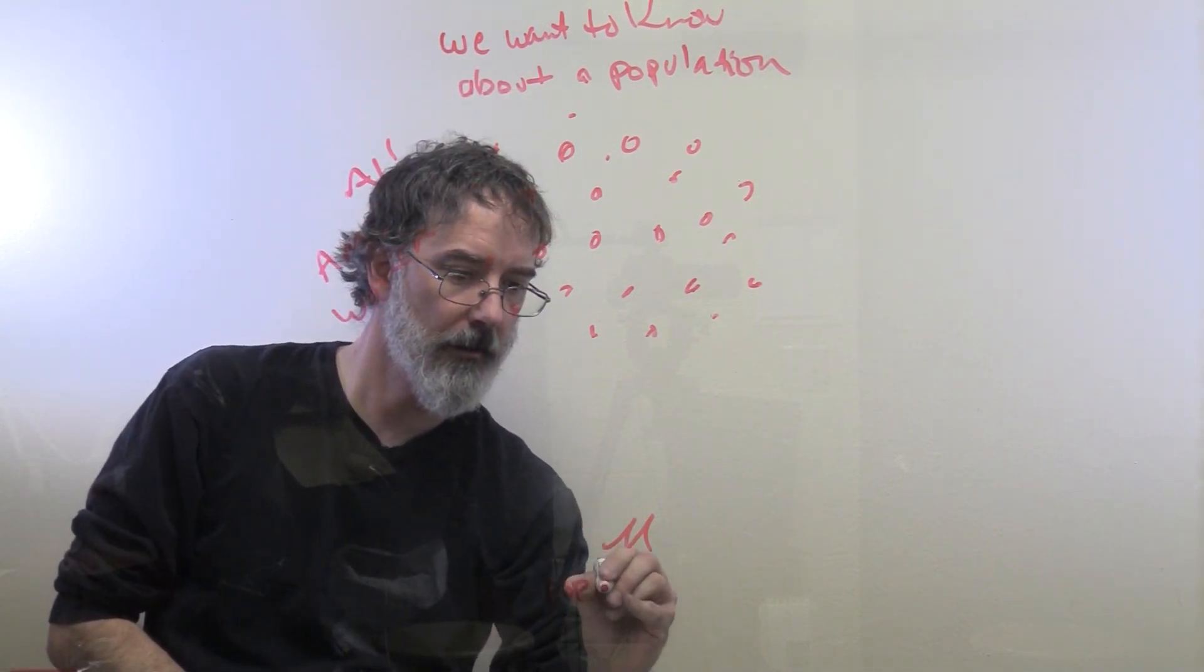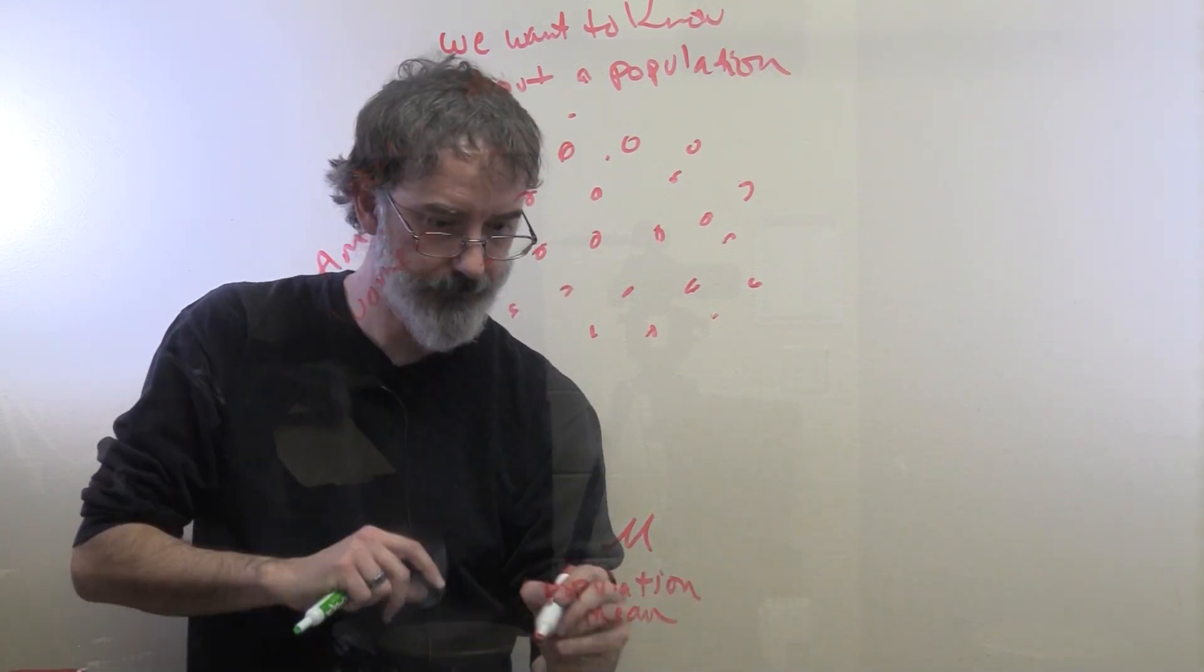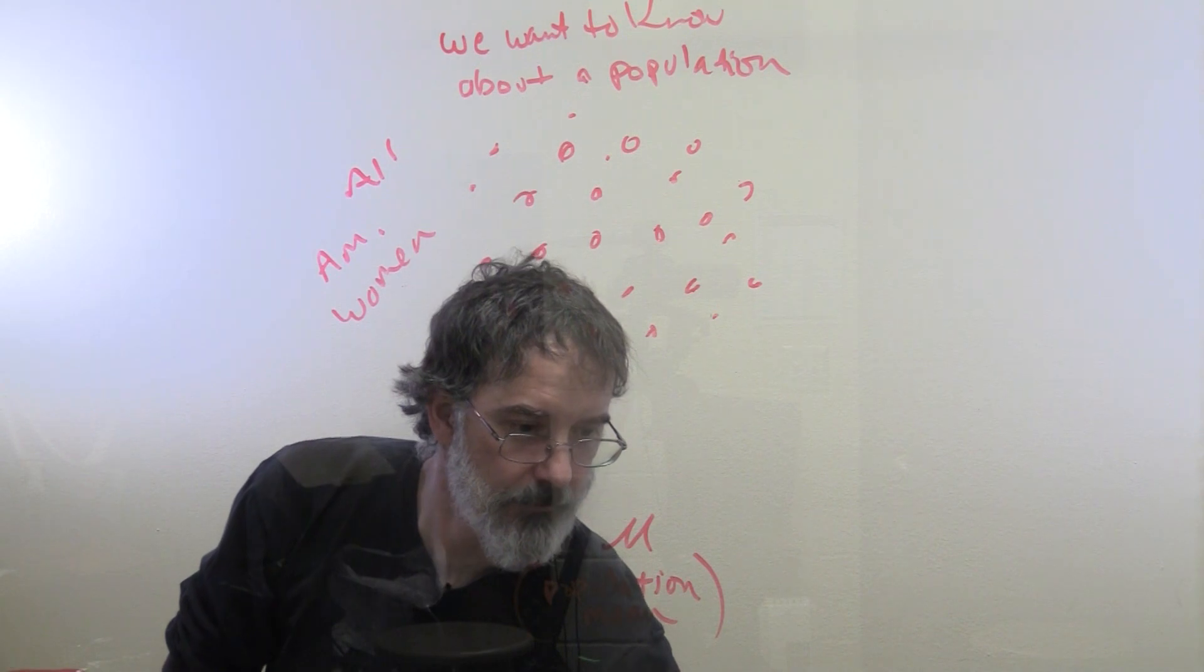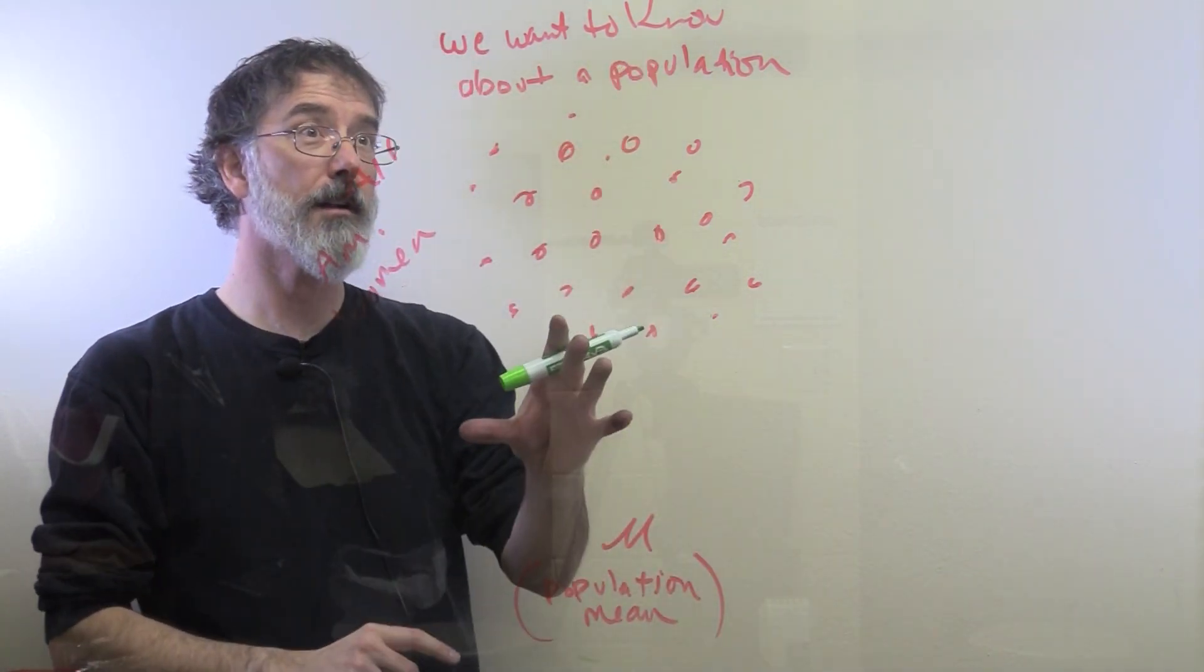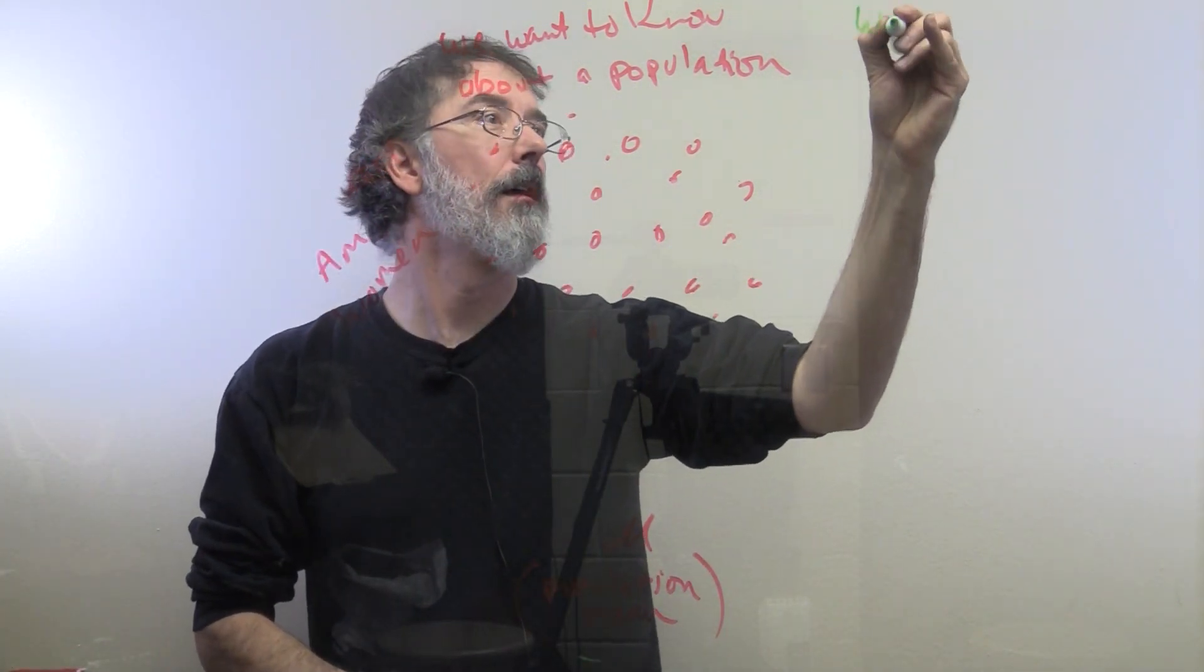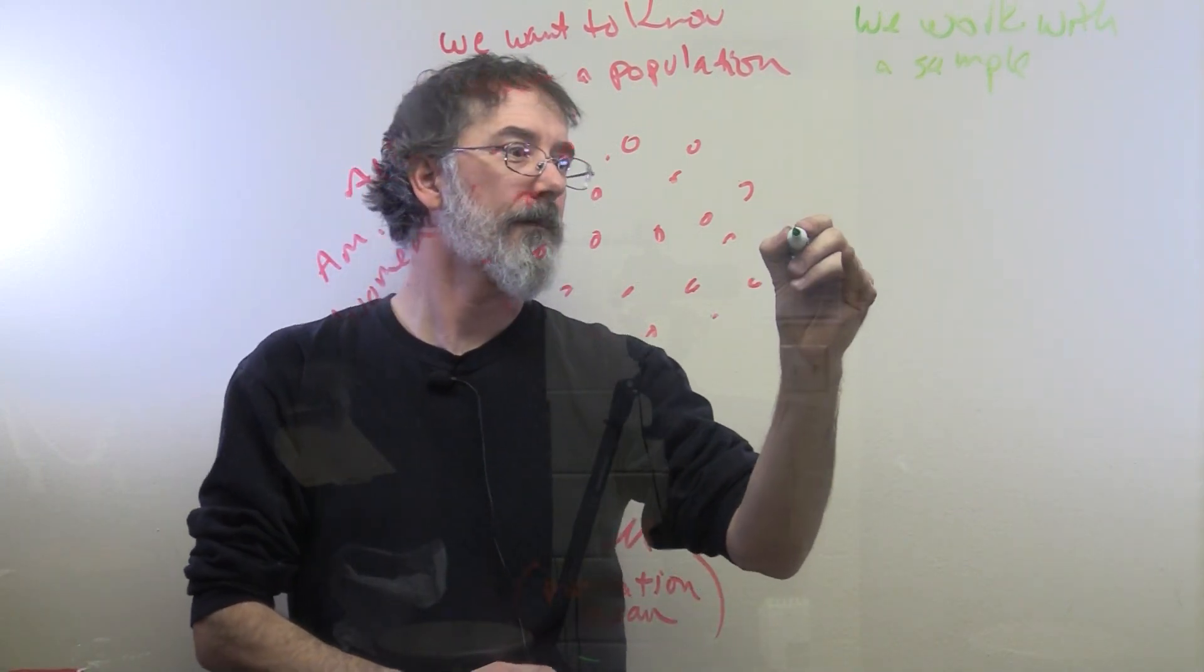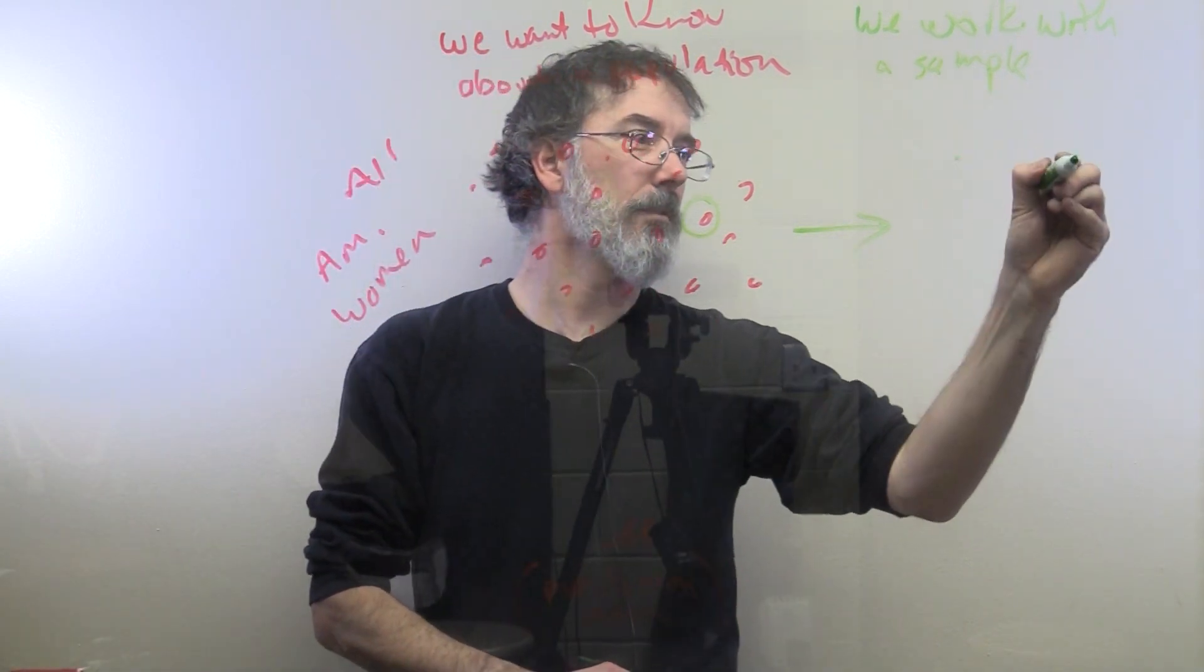So, the symbol for the mean of a population is mu. That is a population mean. Mu is a population mean. So, we want to know the mean of all of these women. Unfortunately for us, we can't get all American women into our lab here at SUU. So, what we do is we work with a sample. This is from the population. It is a subset. So, we will just say we end up getting those folks.